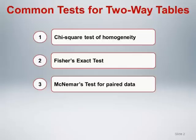R represents rows and C represents columns. Both the chi-square test of homogeneity and Fisher's exact test are applicable for both two-by-two and larger R-by-C tables. McNemar's test is intended specifically for two-by-two tables, but there are closely related tests to McNemar's that generalize to larger two-way frequency tables.